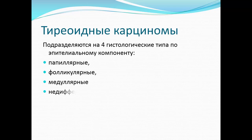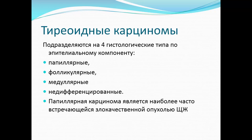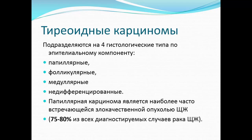Тиреоидные карциномы подразделяются на 4 гистологических типа по эпителиальному компоненту: папиллярные, фолликулярные, медуллярные и недифференцированные. Для УЗИ вопрос про гистологический диагноз в целом неправомочен, но существуют очень наглядные признаки, характерные для папиллярной и медуллярной карцином. Папиллярная карцинома является наиболее часто встречающейся и составляет до 80% всех диагностируемых случаев рака щитовидной железы.